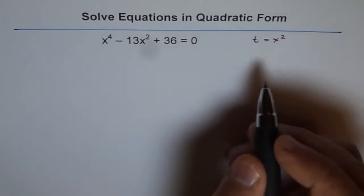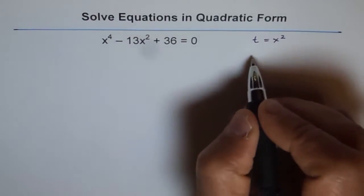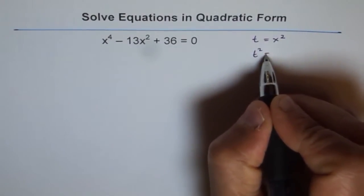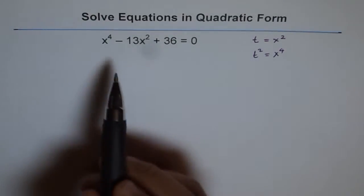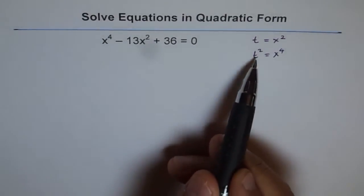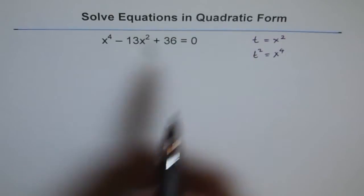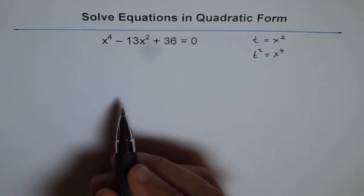Let's see, if t equals x squared then x to the power of 4 is what? Then t squared is x to the power of 4. So I can substitute x to the power of 4 as t squared and x squared as t, and in doing so I will transform my degree 4 equation to a degree 2 equation which will be quadratic.